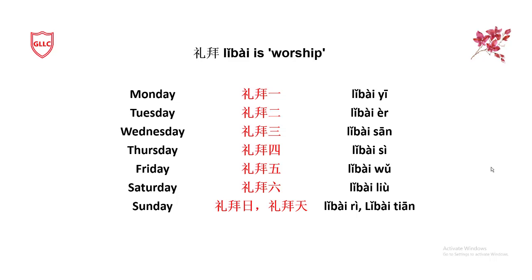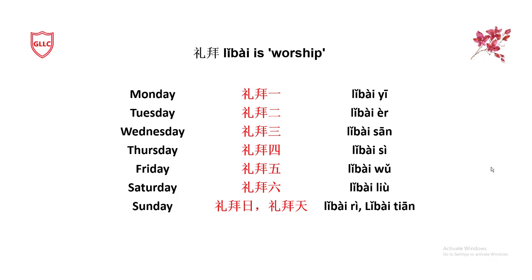There is also another word, Zhou, which means 'cycle.' People use it in the same way: Zhou Yi, Zhou Er, Zhou San, Zhou Si, Zhou Wu, Zhou Liu, Zhou Ri — for Monday through Sunday.